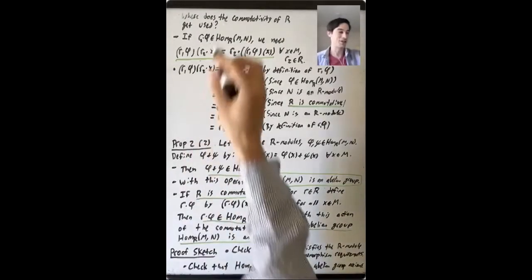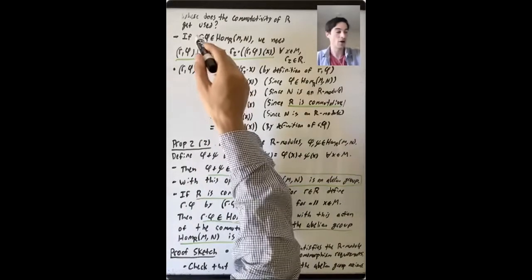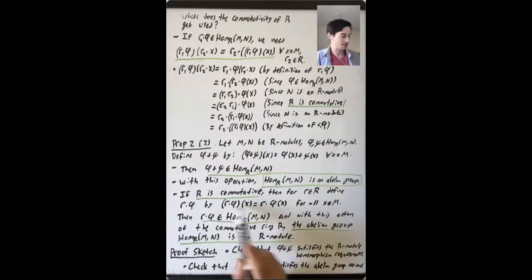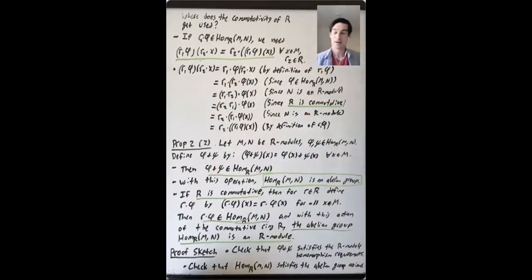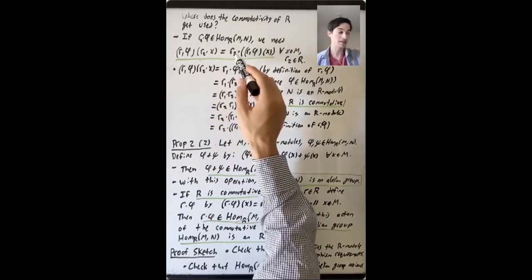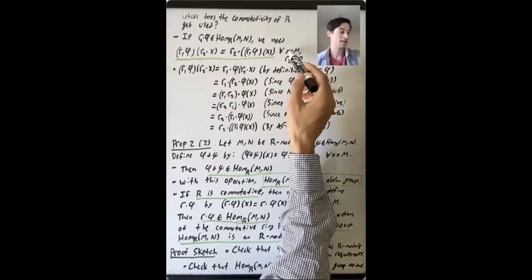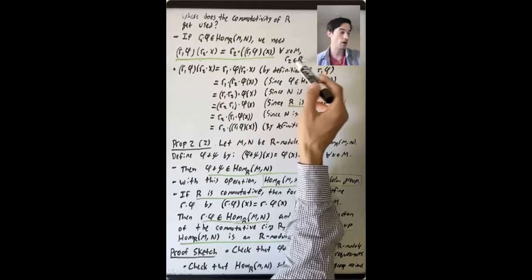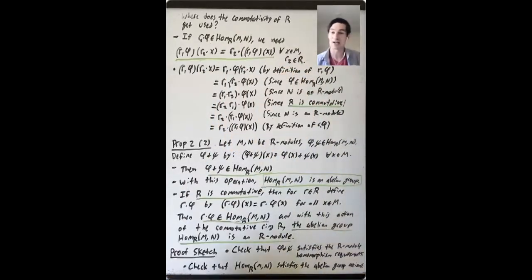Let's talk about where the commutativity of R gets used in the last part of this proposition. If R1·phi, defined as it is, is going to be an R-module homomorphism from M to N, then it must be true that R1·phi applied to R2·x equals R2 times R1·phi of x. This has to be true for all x in the module M and all R2 in the ring — that R1·phi behaves nicely with respect to the action of R on M and on N.